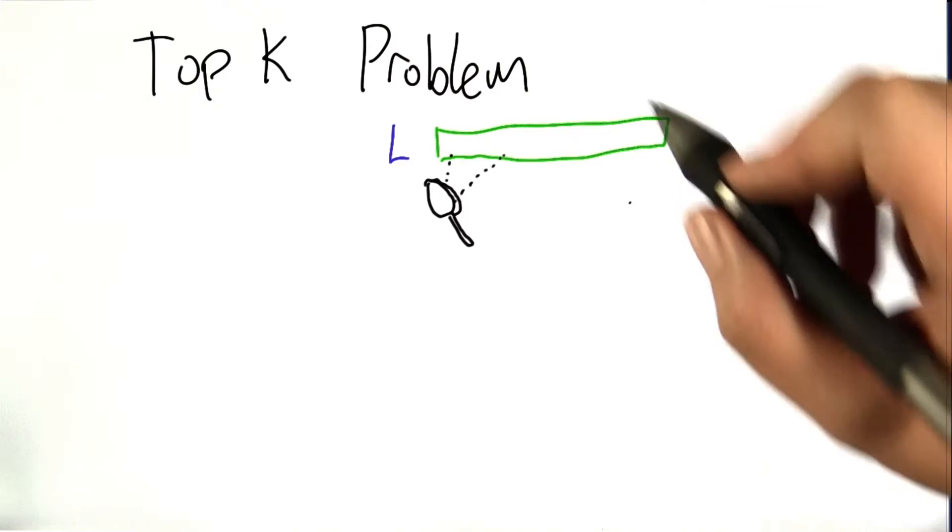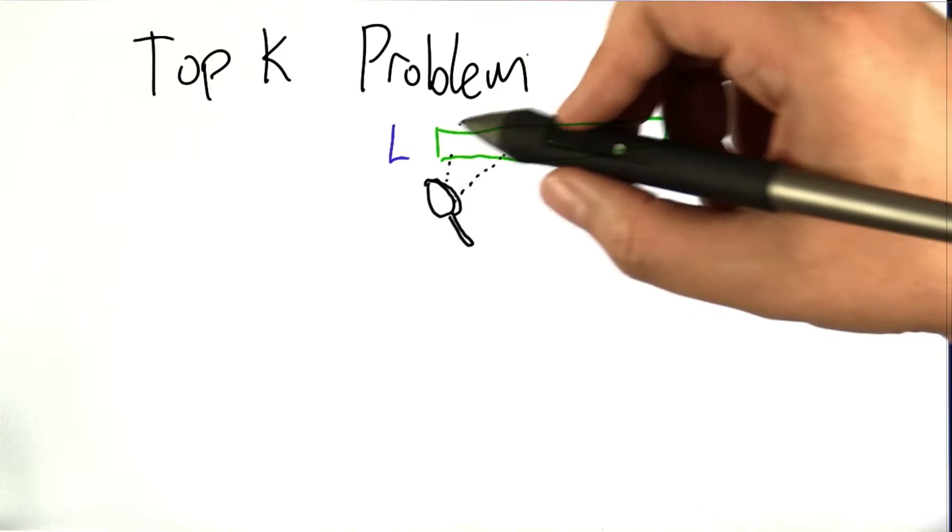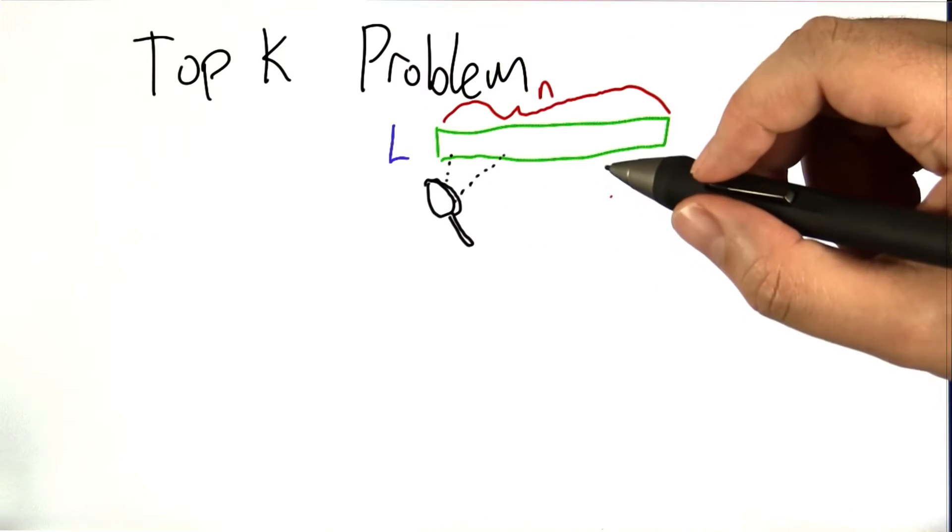So this brings us to a slightly more interesting problem called the top K problem. So here's the idea. Imagine we've got our list of values L, and there's n values in the list.